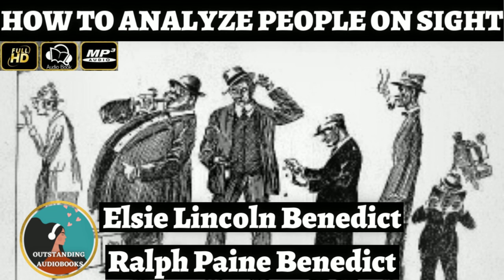How to Analyze People on Sight Through the Science of Human Analysis: The Five Human Types, by Elsie Lincoln Benedict and Ralph Payne Benedict. Printed and bound by the Roycrofters at their shops in East Aurora, New York. Copyright 1921 by Elsie Lincoln Benedict and Ralph Payne Benedict. All rights reserved.